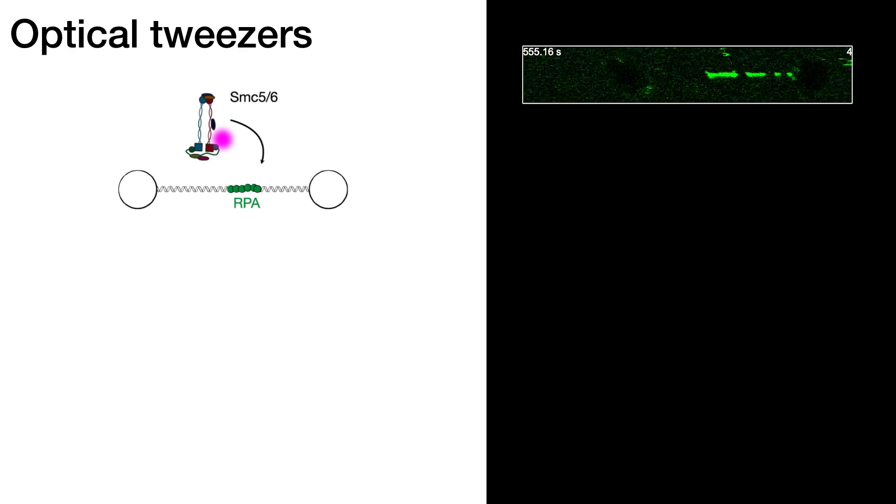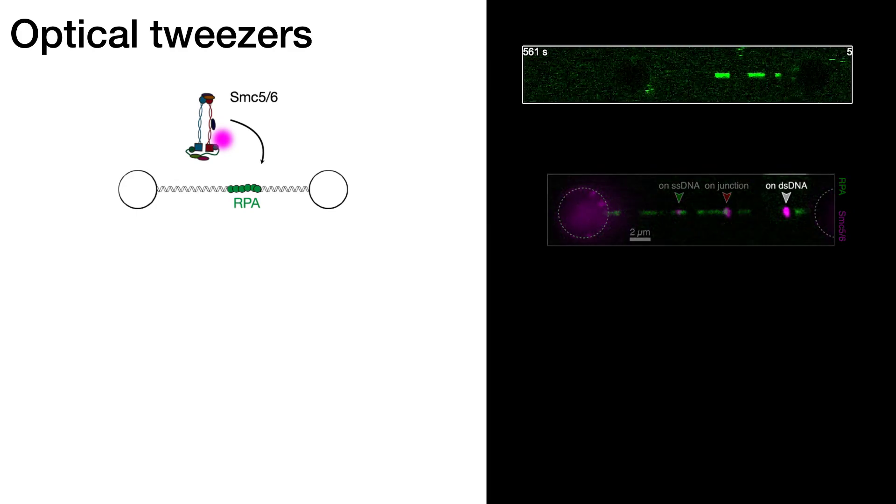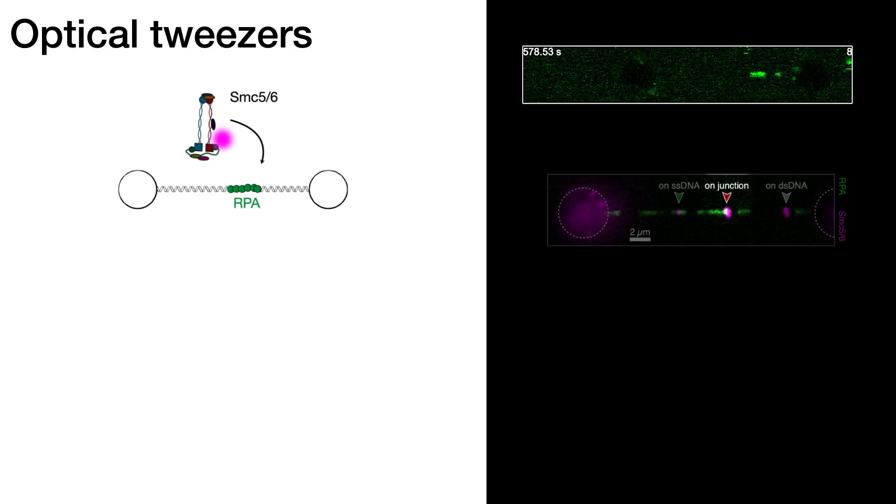So when we add SMC56 labeled to this reaction, what we will see is that SMC56 complexes get recruited both to the double-stranded parts in dark, to single-stranded parts that are coated with RPA in green, as well as to the junctions. And in fact, the junction fraction was the most abundant in these experiments.